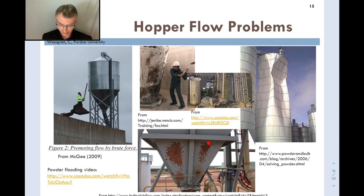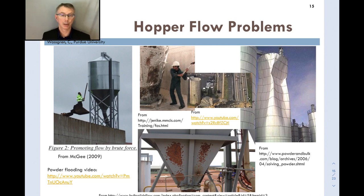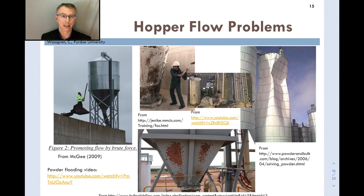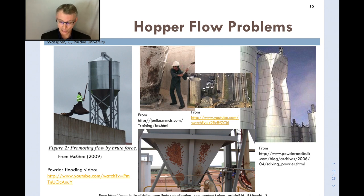Here's another example of hopper rash where people have banged on the hopper to promote flow. A collapsed silo is shown — illustrating the statistic about a thousand silo failures per year in North America. Another silo image shows vacuum-induced buckling: the material had low permeability, so as it discharged, air couldn't flow back in to fill the void, creating a partial vacuum inside the silo below atmospheric pressure, causing it to buckle inward.